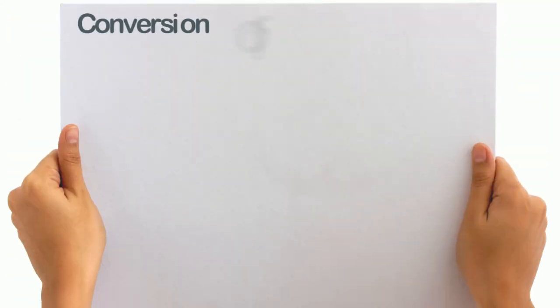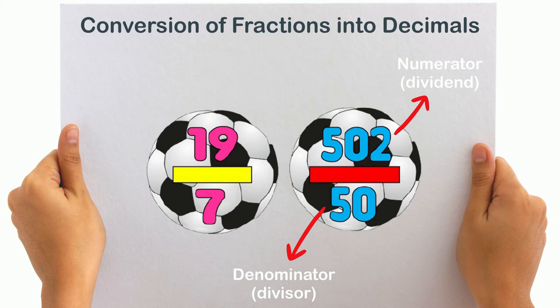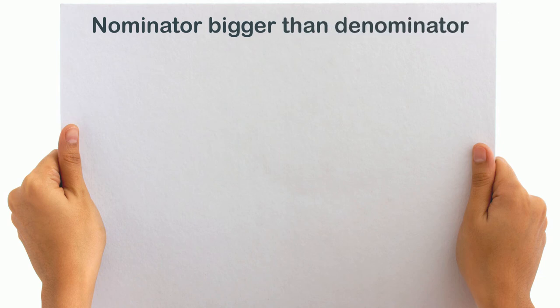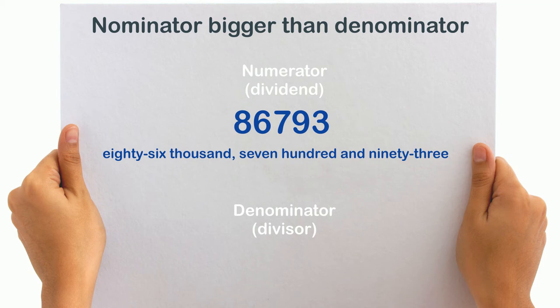Conversion of fractions into decimals. To convert a fraction into a decimal number, we can divide the numerator by the denominator until we get zero as remainder, but an easier way is to count the zeros of the denominator and put the decimal point in the numerator according to it. Here we have three examples of fractions which have the same numerator — 86,793 — but different denominators: 10, 100, and 1000. The numerator is bigger than the denominator in all three examples.